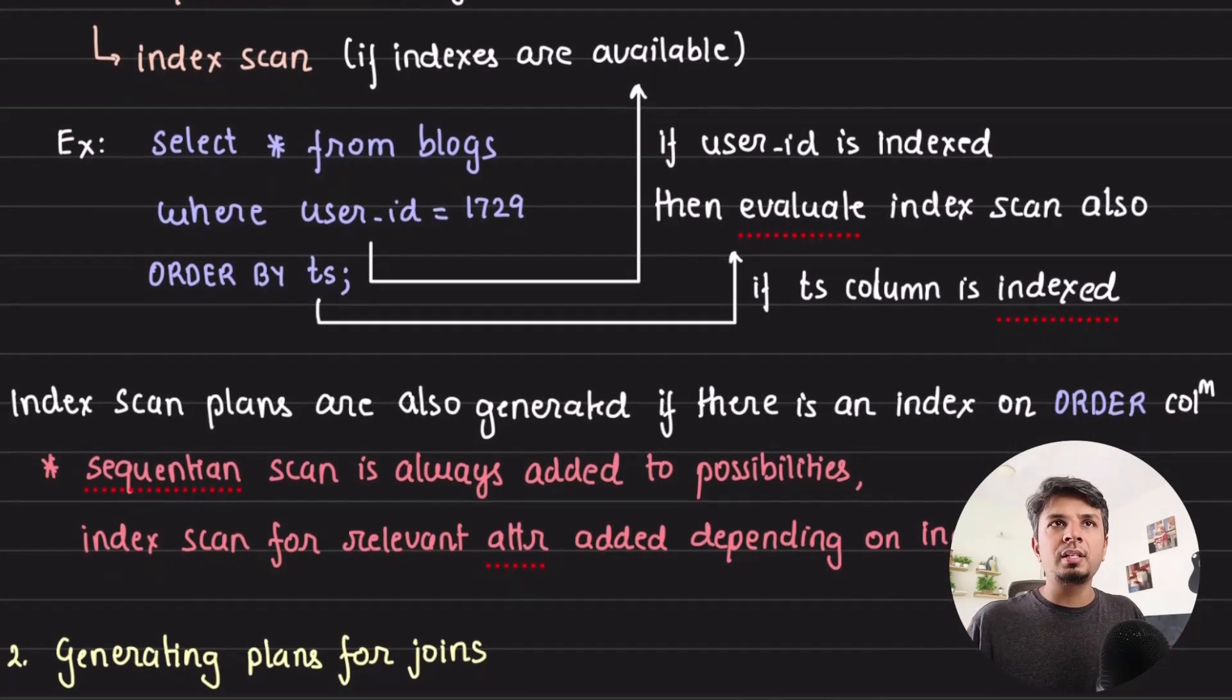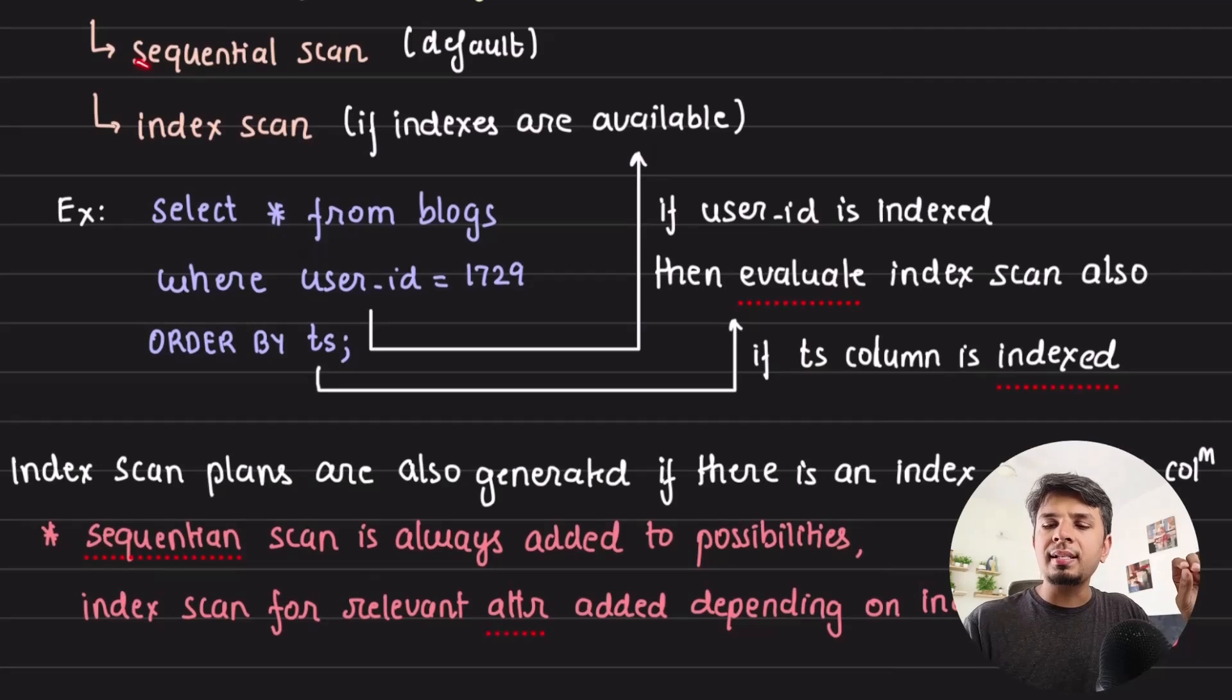What the optimizer does, it does not just say, hey, I have an index, I'll just pick it. It basically considers all possible ways through which it can do it. So in a candidate set, it adds a sequential scan of the table by default and in case the index is available, it adds the index scan also.